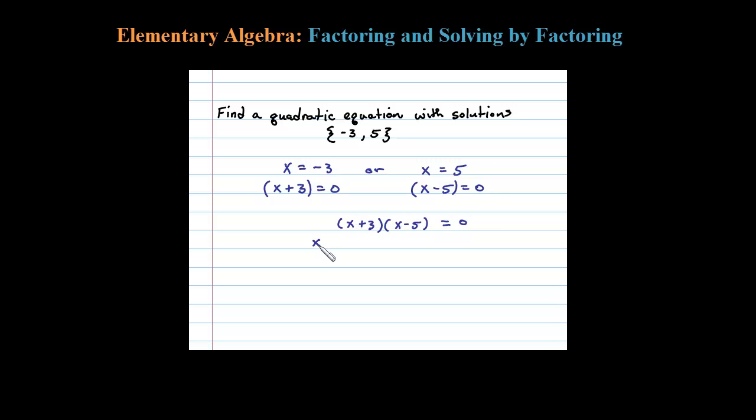We have x squared minus 5x plus 3x minus 15. Combining like terms, we have x squared minus 2x minus 15 equals 0. So this is a quadratic equation that has those two original solutions, -3 and 5.